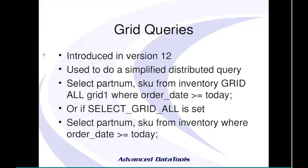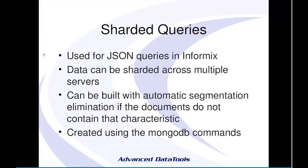Sharded queries are for the JSON folks. JSON is a NoSQL data type — essentially a large text field with key-value pairs. If you have JSON data spread across a cluster, you can shard queries. When querying the NoSQL data type, it performs elimination based on fields — so if a field doesn't exist in certain systems (e.g., you introduced the field in year four, data is spread by year), it only queries systems four through ten and eliminates the others entirely. Sharded queries are based around the MongoDB API integration.